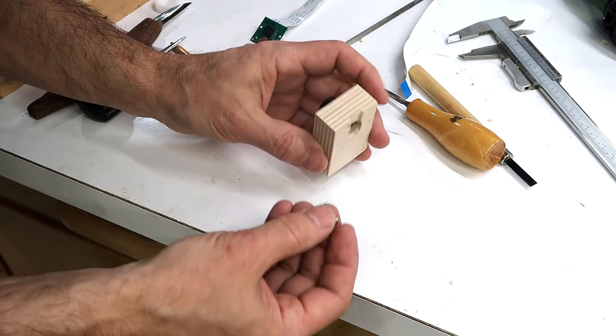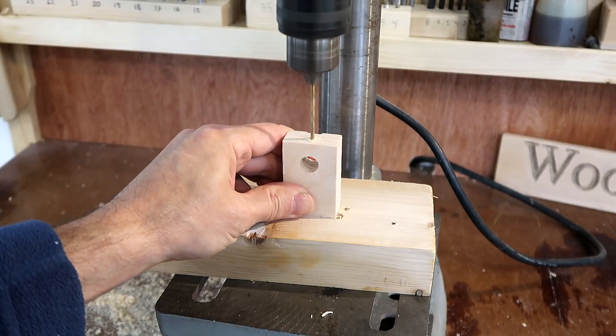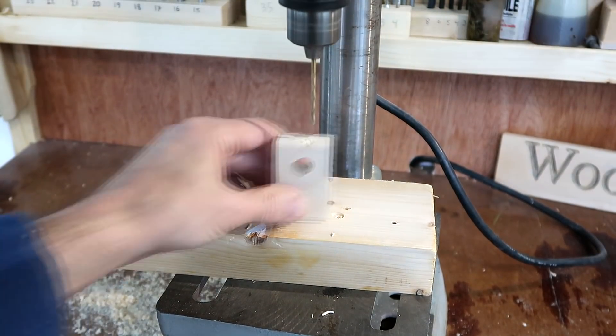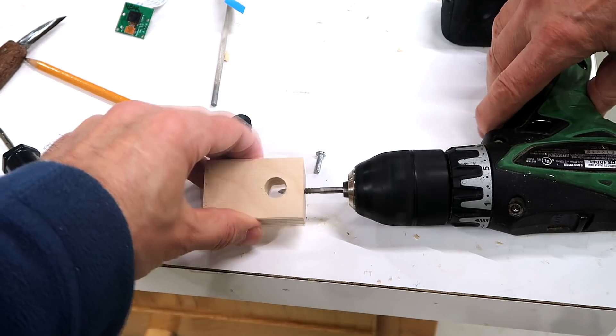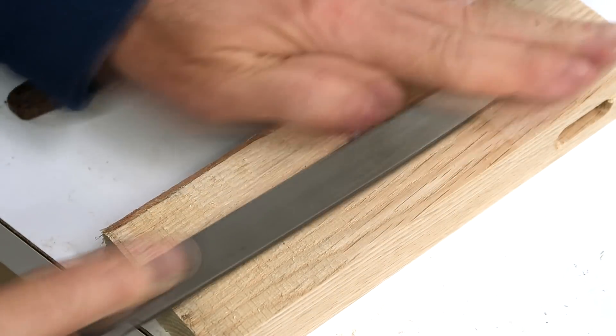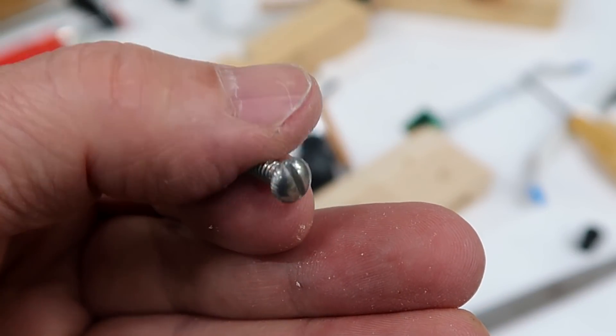So I figure maybe I should have some kind of locking screw to clamp it in from the top. Now I'm just going to knurl that screw a little bit to make it easier to grab by hand. Well, that worked better than I thought it would.